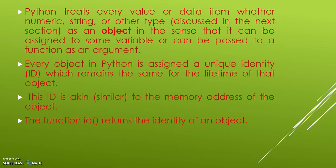Look at these points. These are the main points about everything is an object. This is very important. Python treats every value or data item, whether numeric (that is, numbers), string (that is, alphabets), or other type, for example alphanumeric, as an object. This is the main part of everything is an object. Make sure you understand this very well.